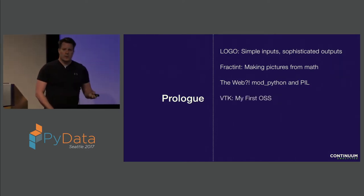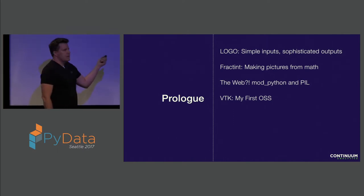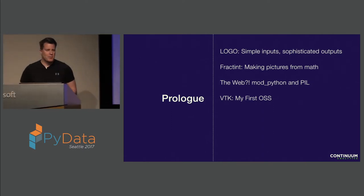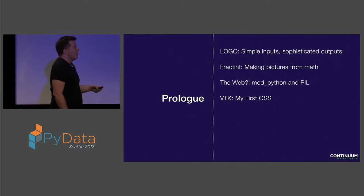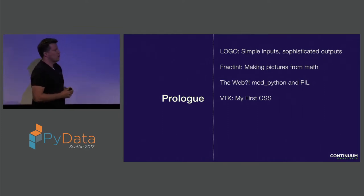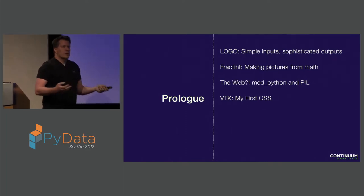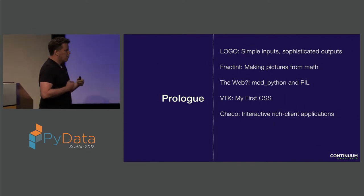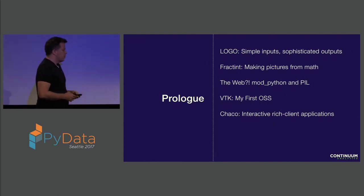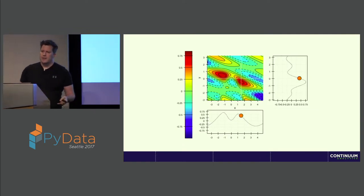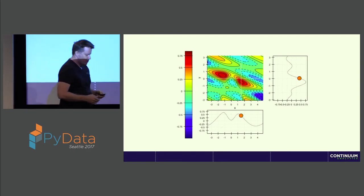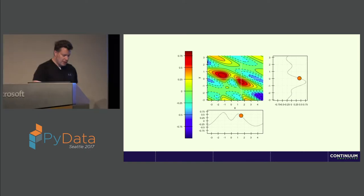Around the same time, I also made my first contribution to open source software — that was to VTK, the visualization toolkit. It's an enormous C++ library for 3D visualization pipelines with bindings in Python. I forget what my contribution was but it was some minor contribution. I also worked quite a bit on another open source library called Chaco, which was contemporaneous with Matplotlib and really geared towards interactive visualizations and rich clients. It was kind of fiddly and verbose, but I'd like to think I've learned some lessons from Chaco that we've been able to pull forward into Bokeh.